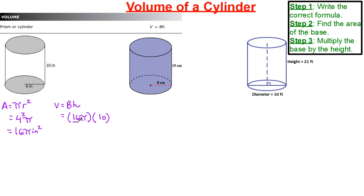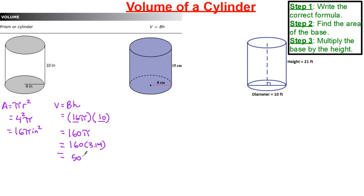Our base is 16 pi and our height is 10. I multiply 16 times 10 first — that's allowed since we're multiplying three numbers. 16 times 10 is 160, and we still have pi. Now 160 multiplied by 3.14 gives us a value of 502.4 inches cubed.